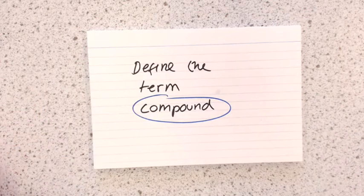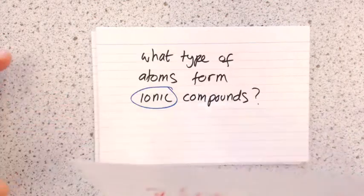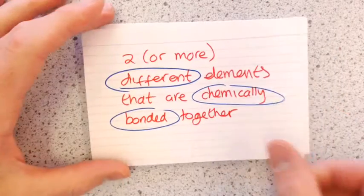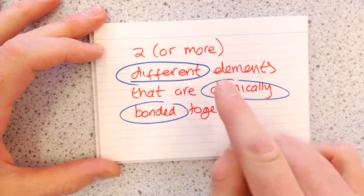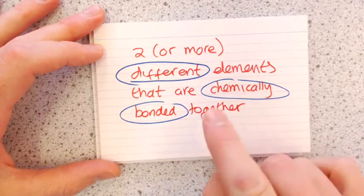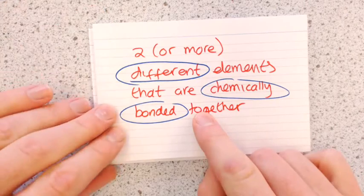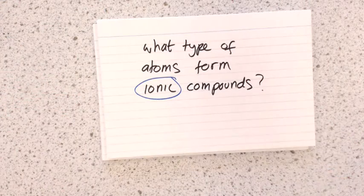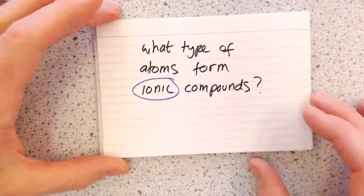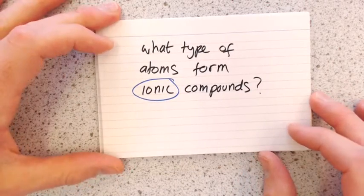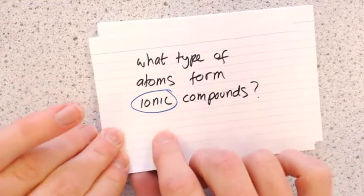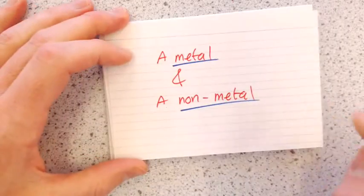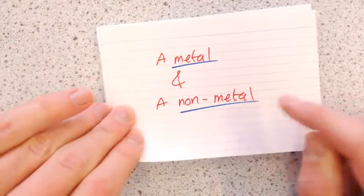First question: define the term compound. A compound is two or more different elements that are chemically bonded together. Next: what type of atoms form ionic compounds? You need a metal and a non-metal.